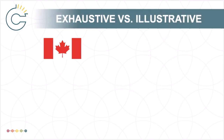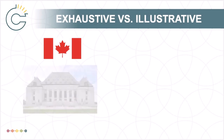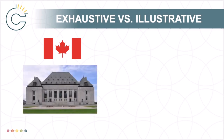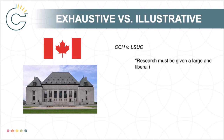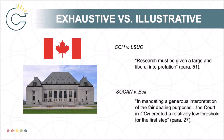The Supreme Court of Canada has suggested that meeting a Fair Dealing category is the easy part of a Fair Dealing test. For example, in the CCH case it stated that research must be given a large and liberal interpretation. And in the SOCAN v. Bell case, it reiterated that the first step — assessing if one of the purposes is met — has a low threshold.